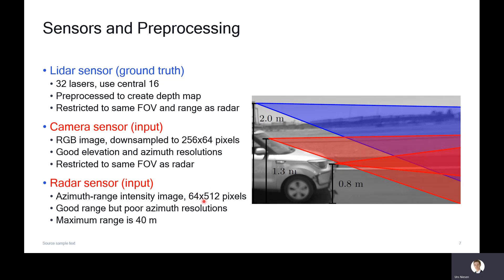One thing I should point out is that the aspect ratios of the camera image and the radar image are vastly different. Specifically, the radar has a very poor azimuth resolution but a very high range resolution. The camera has a good resolution in both directions, elevation and azimuth.